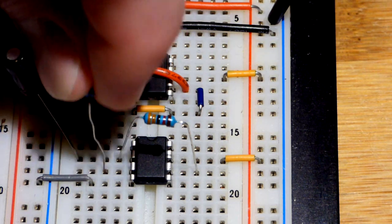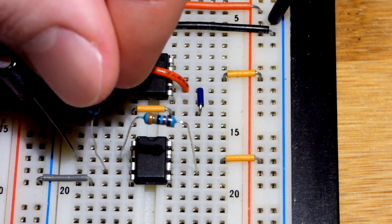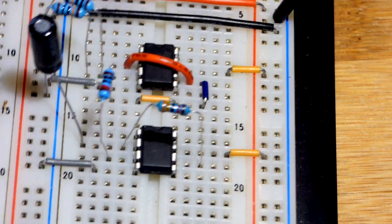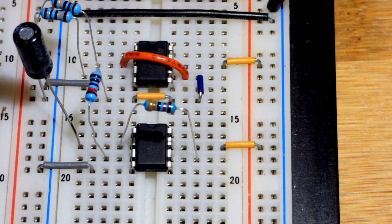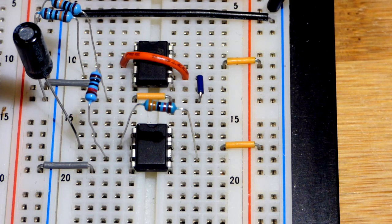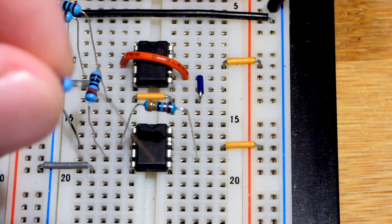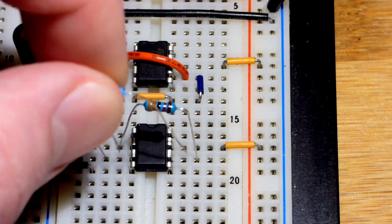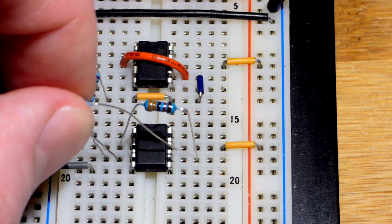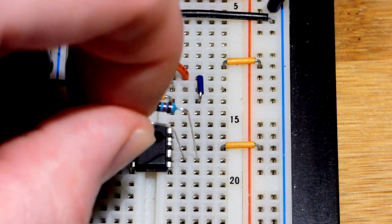We're going to put that to the non-inverting input right there. There's only one more thing for this circuit other than adding a load that lights up, so it's kind of easy to see what's going on. Another 10 kilo ohm resistor—we're going to put it to the non-inverting input and then to the output right there.